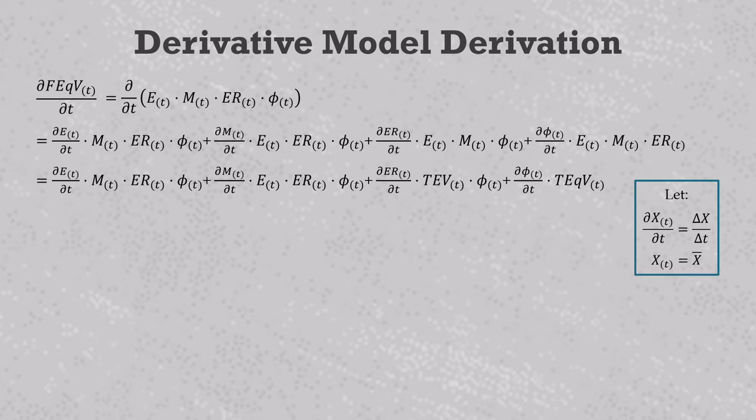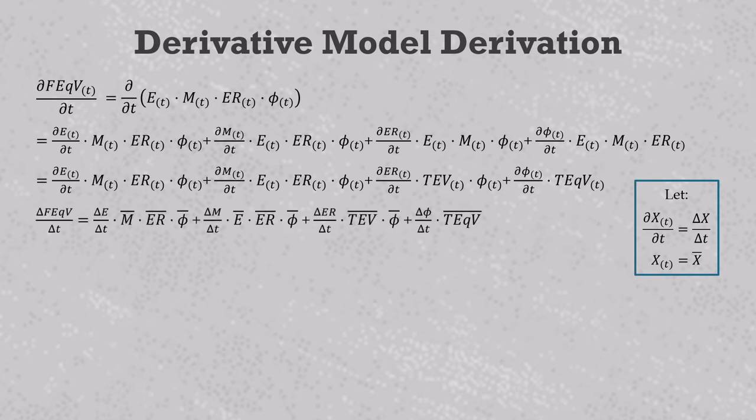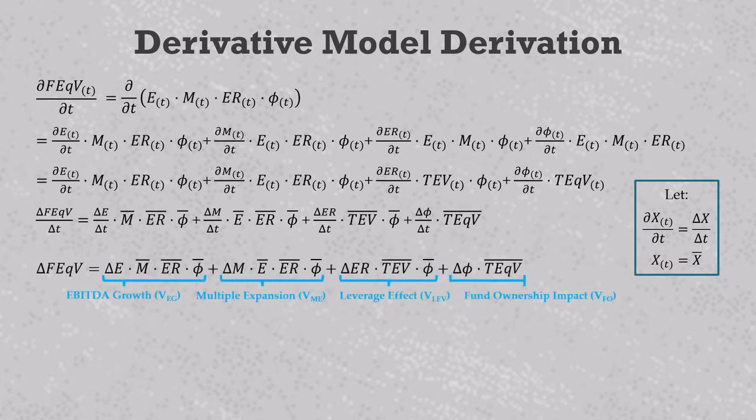We swap out the derivative terms with delta X over delta T and replace the X sub T terms with the average value between T1 and T2. This gives us the following expression. And then we see that these delta T terms in the denominators cancel, and we get the derivative model expression for fund-level value creation with EBITDA growth, multiple expansion, leverage effect, and fund ownership impact.